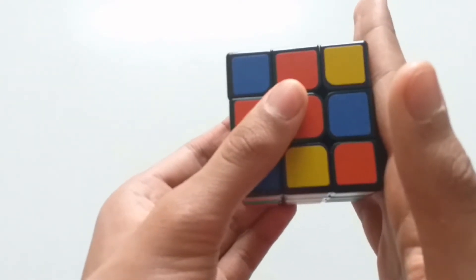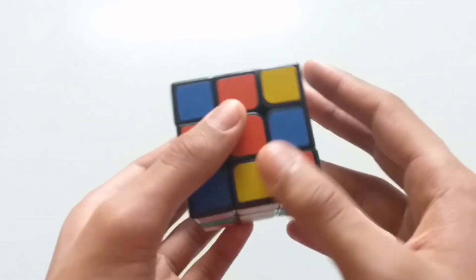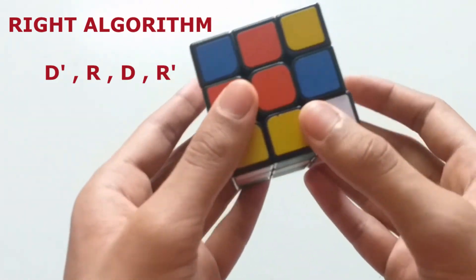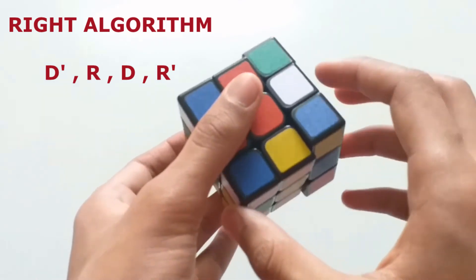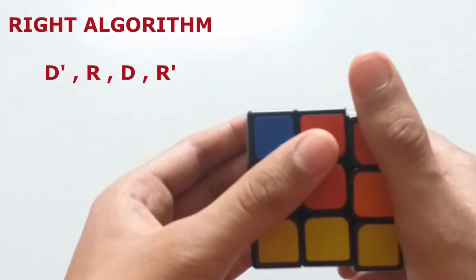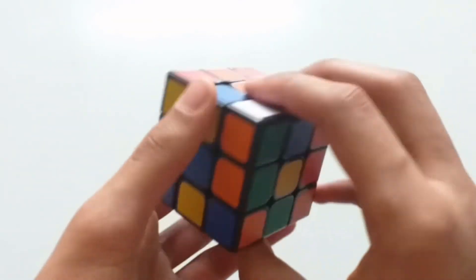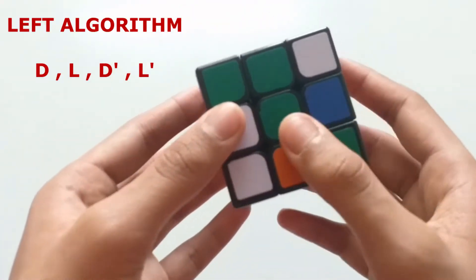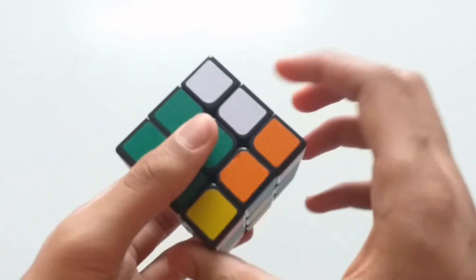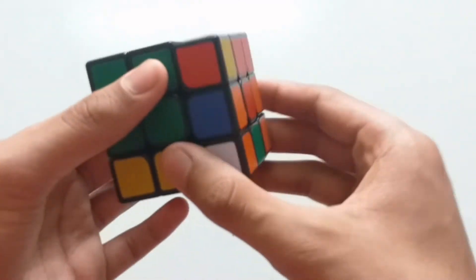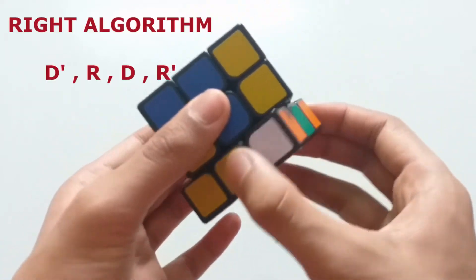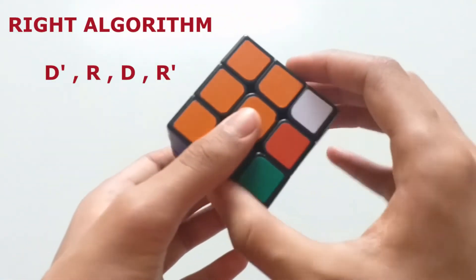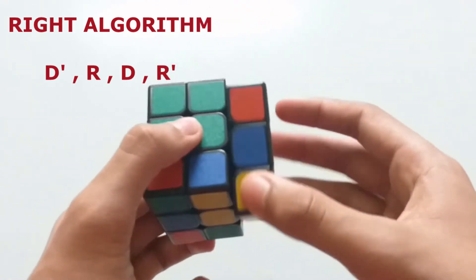If you want the corner piece at the right, use the algorithm and then take it to the bottom.